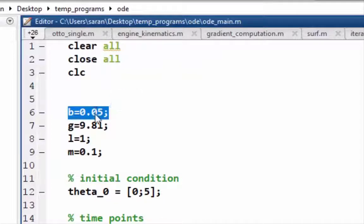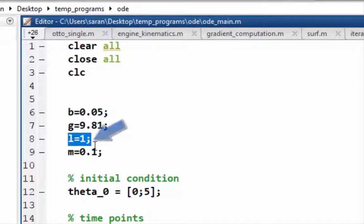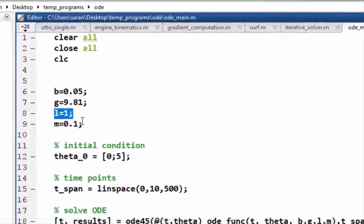Hopefully at this point you know what these commands do and then I'm defining my inputs. So B is the damping coefficient, G is gravity, L is the length of the pendulum and M is the mass.